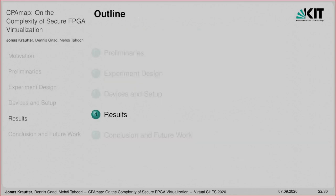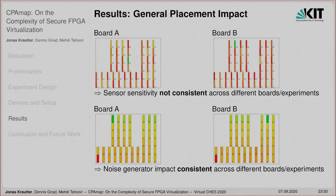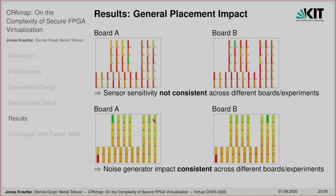Presenting our results, I first show the effects of general placement on sensor sensitivity and the impact of noise generators across the 50 FPGA regions. We found that sensor sensitivity is not consistent across different boards or experiments, so we cannot define attacker regions that are consistently more or less sensitive to voltage fluctuations for different FPGAs. However, we can find regions — for example the lower left corner — where switching activity has a much higher impact on sensor values than in other regions such as the upper right, and these results for noise generators are consistent across different FPGAs.